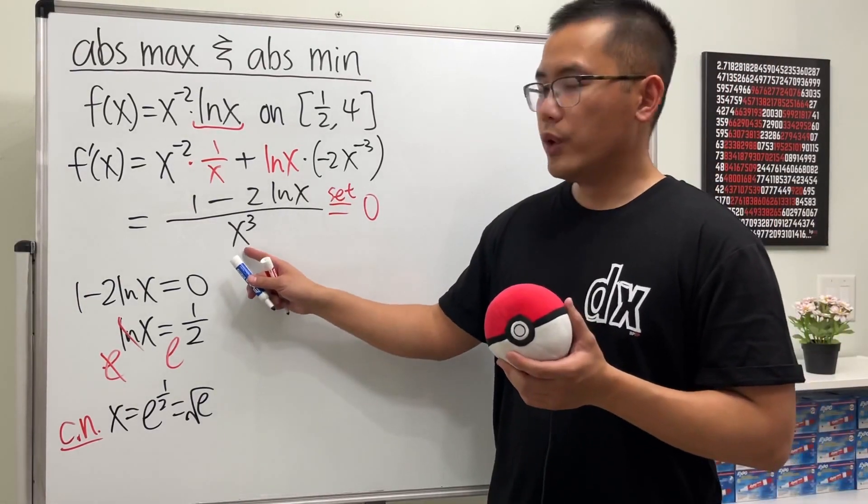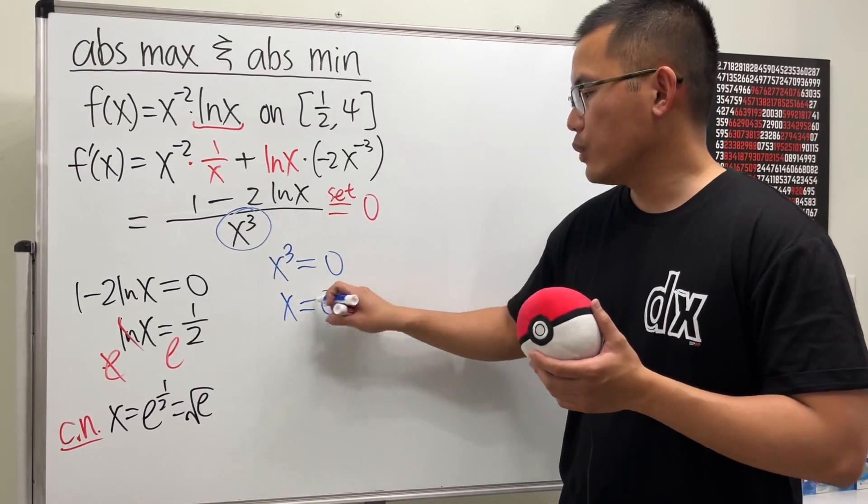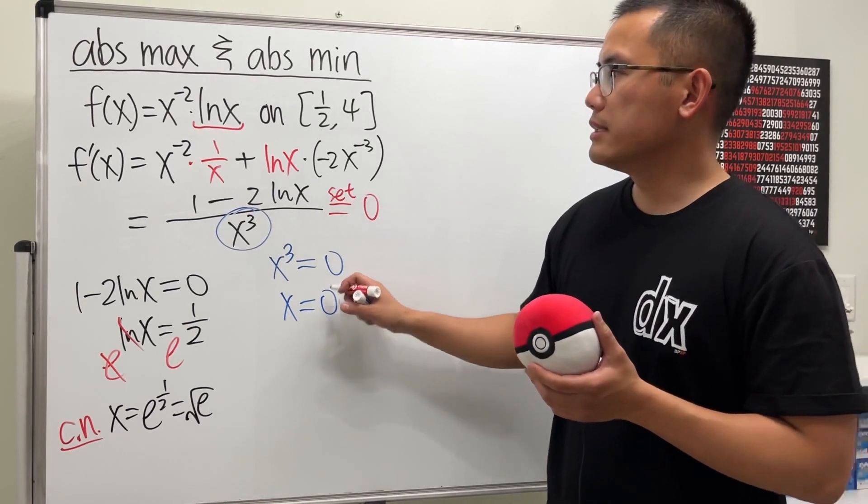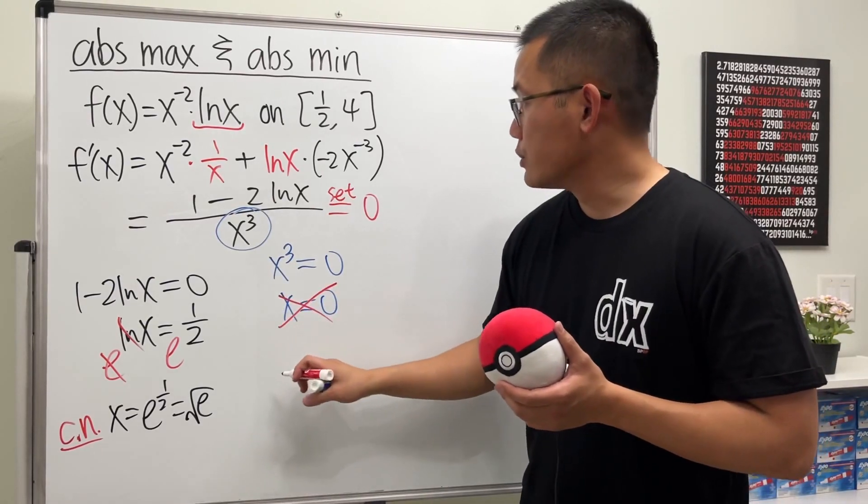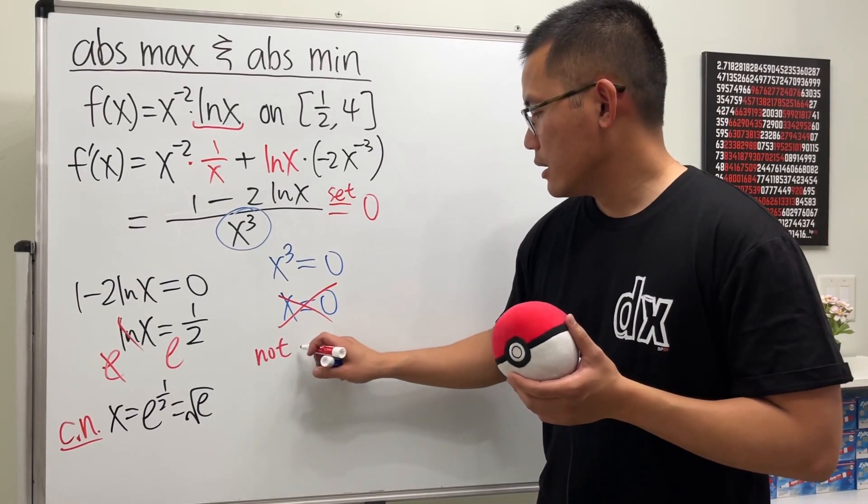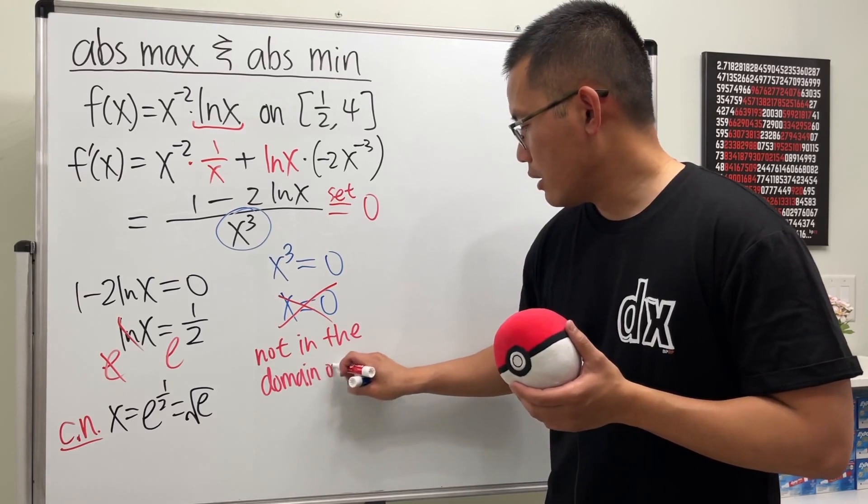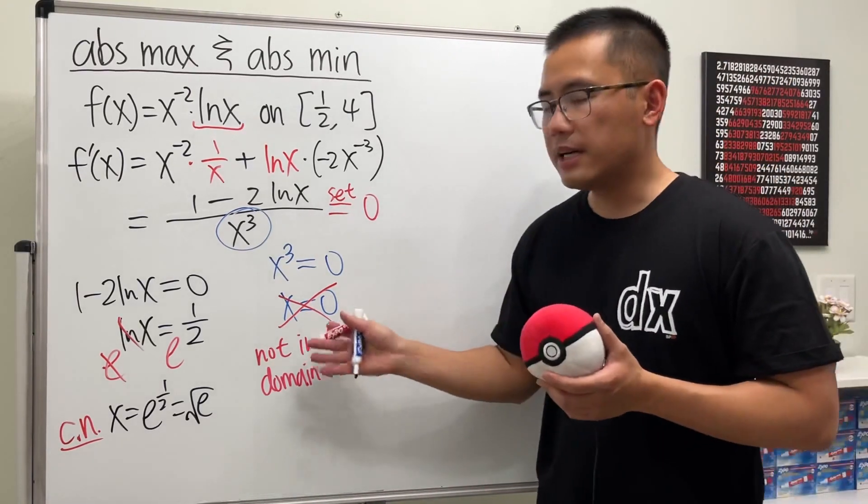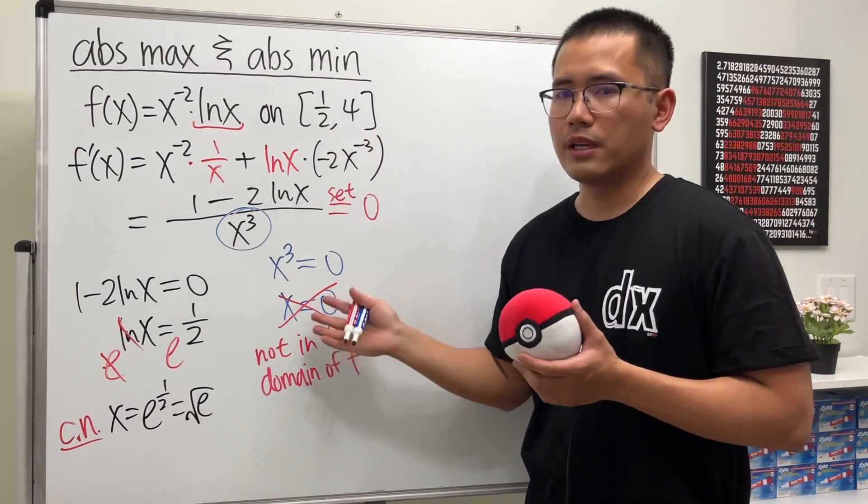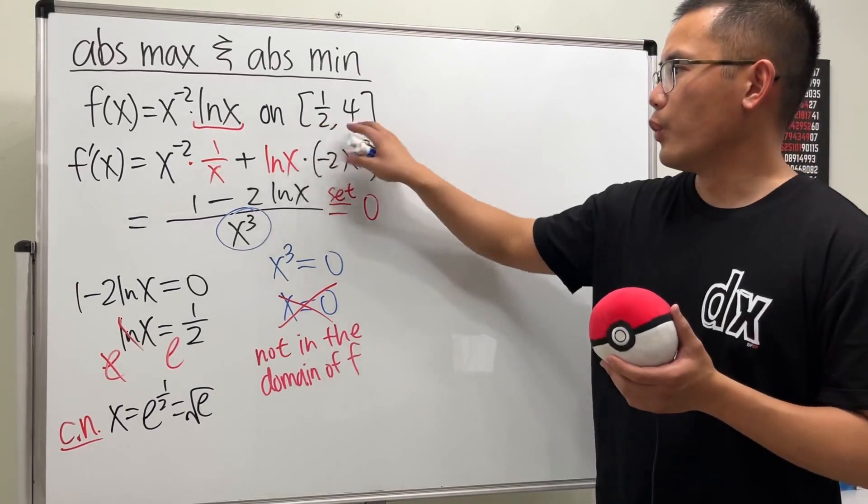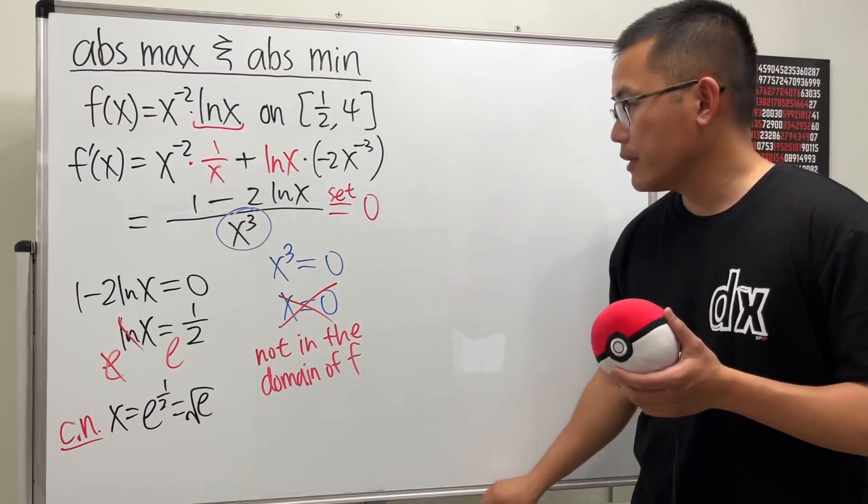Because if we want to set the denominator to be 0, we can solve it. This right here is just x equal to 0. But the thing is that 0 is not in the domain of the original function. So we don't consider this. Not in the domain of f. So this is not a critical number. One other way to look at it is, of course, 0 is not in this interval. But even though we did not have the interval here, 0 is not considered a critical number.